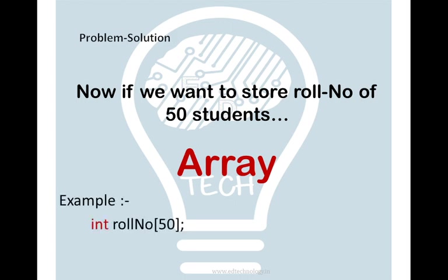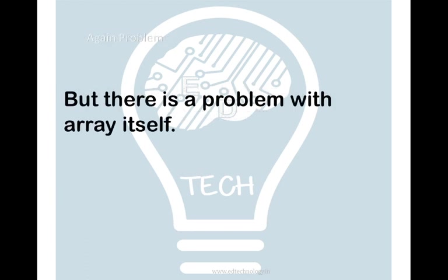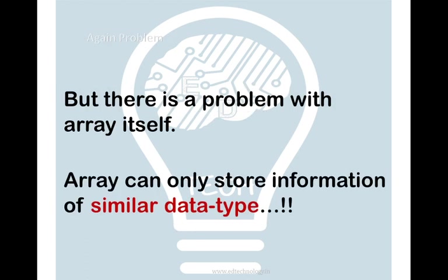Like this, the example we have seen in the earlier lectures of the array, that we have the roll number which is the name of the array and the size and the type of value which we are storing, which is integer type. If you remember in the array lecture, I have told you that array can store similar data type only. But then again there is a problem that it can only store similar data type.